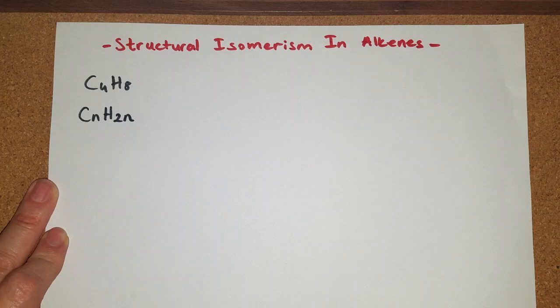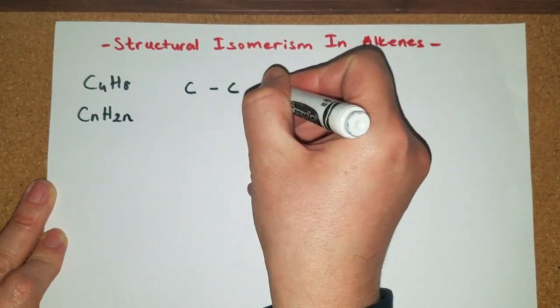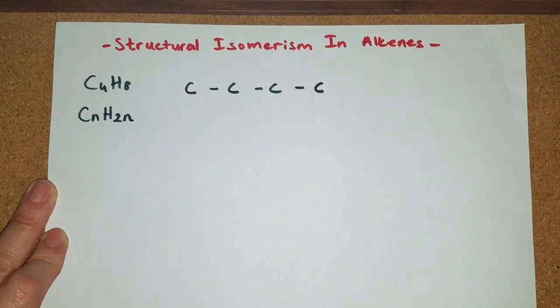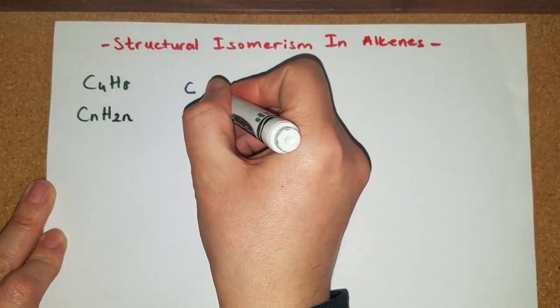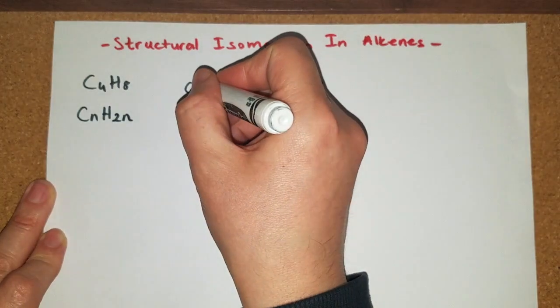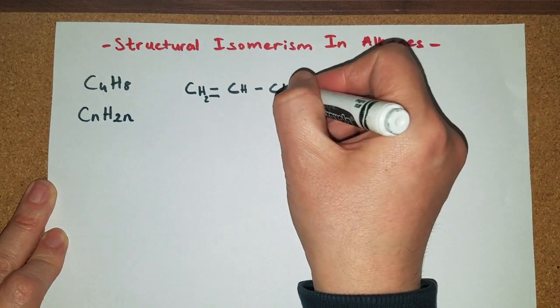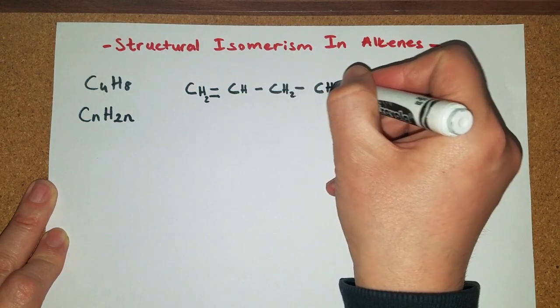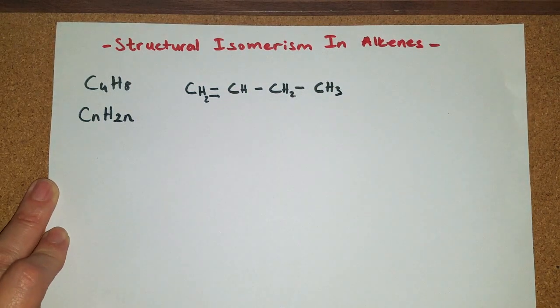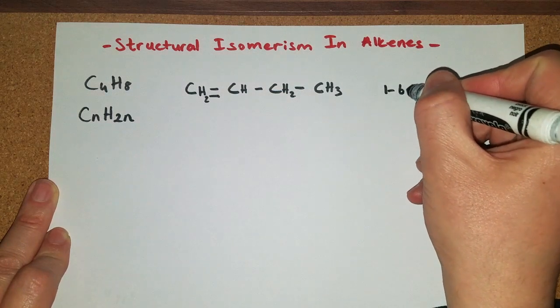The first structure that you are going to draw for this compound could be a four carbon atom chain with a double bond between the first and second carbon atoms. Then you are going to have two hydrogens here, one hydrogen here, two of them here and three of them here. Now this compound is 1-butene.